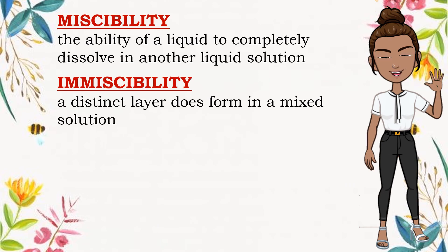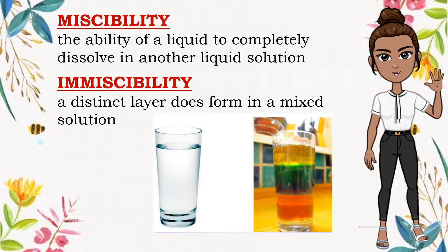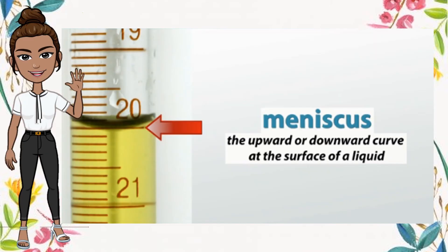Miscibility refers to the ability of a liquid to completely dissolve in another liquid solution. A distinct layer between two liquids will not form when you have a solution that is labeled miscible. When a distinct layer does form in a mixed solution, this is called immiscibility. For example, a type of immiscible liquid is oil and water. When mixed together, oil will essentially sit on top of water, resulting in the formation of a very noticeable layer. In this figure, the first is miscible and the second at the right is immiscible. In chemistry, you can exploit this concept of forming a layer to tell the difference between miscible and immiscible liquids.